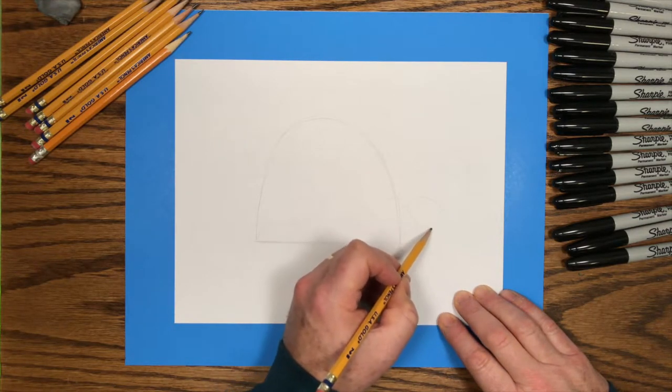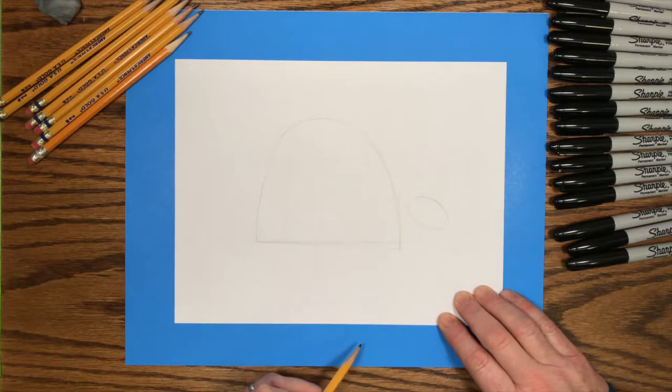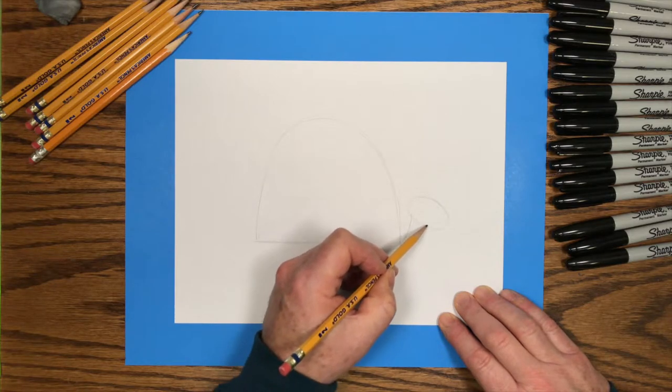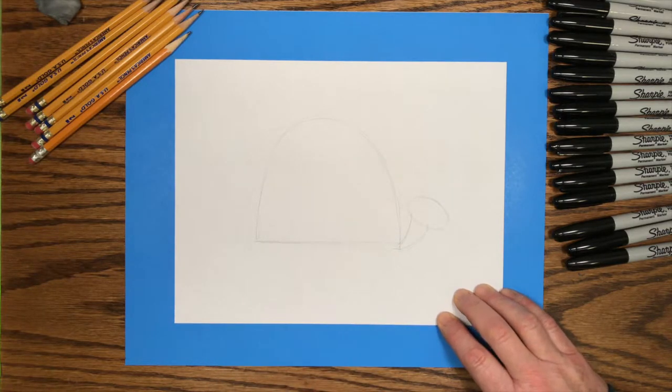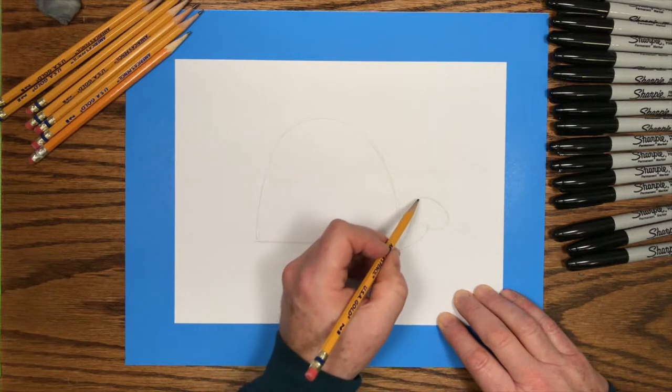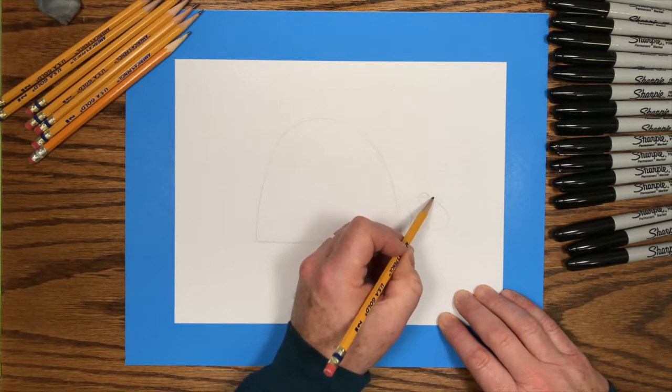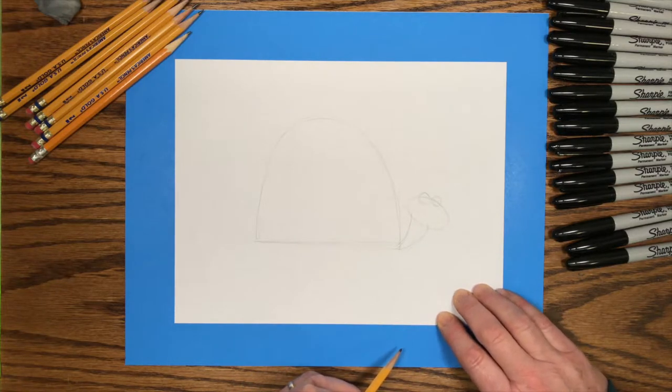And then a little oval off to the side of the shell. That's his head. And then his little neck that attaches to the corner of his shell. And then I'll draw two small circles on the one top end of that oval. Those will be the turtle's eyes.